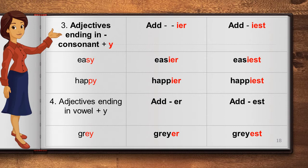Next, we take adjectives ending in vowel plus 'y'. In this case, when we compare, we do not remove Y — we just add '-er' for comparative degree and '-est' for superlative degree. For example, 'grey' becomes 'greyer' (G-R-A-Y-E-R) and 'greyest' (G-R-A-Y-E-S-T). Children, remember you are not supposed to remove Y in this case.